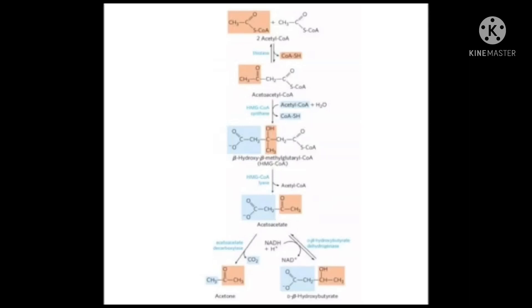Spontaneous decarboxylation of acetoacetate gives acetone. The other secondary ketone body, beta-hydroxybutyrate, is formed from acetoacetate via the enzyme beta-hydroxybutyrate dehydrogenase. This dehydrogenase enzyme uses NADH. So beta-hydroxybutyrate is the secondary ketone body formed from acetoacetate by beta-hydroxybutyrate dehydrogenase.